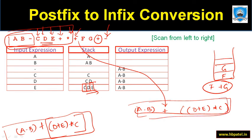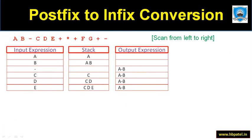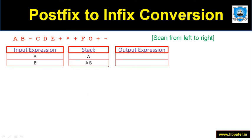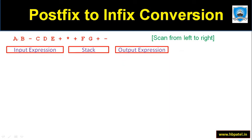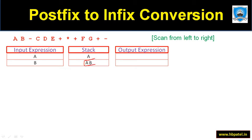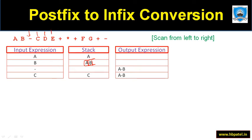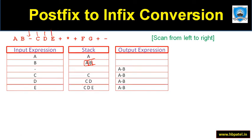Let me go through the recap from scratch. Initially we push 'a' onto the stack, then push 'b'. The moment we get minus, we pop both and get 'a - b'. Next comes 'c', 'd', and 'e', which are all pushed onto the stack.